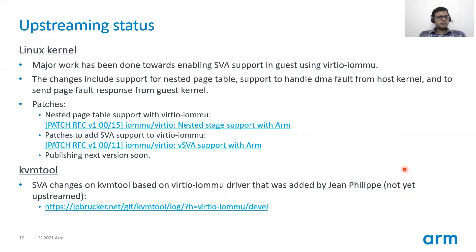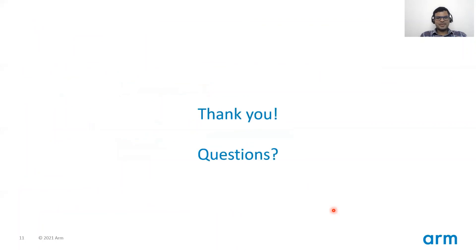On the KVM tool side, the SVA changes are based on the VirtIO IOMMU driver that was added by John Phillip. At this point, I would like to thank John Phillip for his various guidance on this SVA work. We'll soon publish the KVM tool branch as well for anyone to try out these SVA changes. We want more and more review to happen for these SVA changes in the VirtIO IOMMU driver so that once the IOMMU user API changes come, it will be easier to incorporate them and get the patches accepted sooner. That's all I had for the presentation. Thank you so much and I'm open to questions.